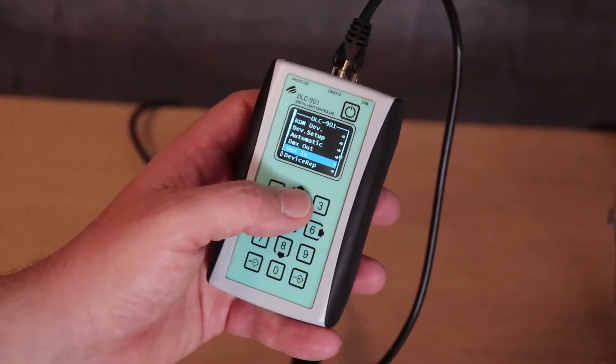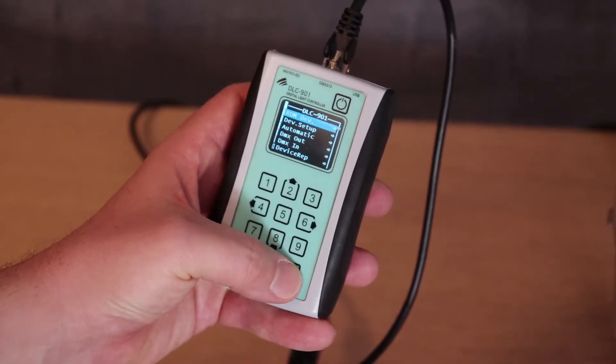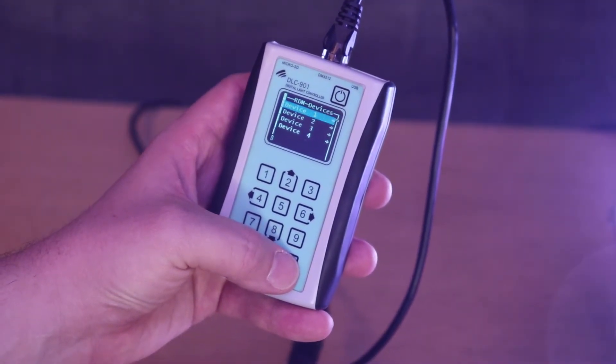For discovery, navigate to the RDM device menu and enter. All devices connected to the line will be polled and the list of devices will populate. To change the settings of a device, navigate to it on the list.